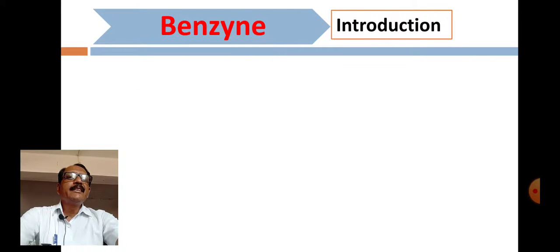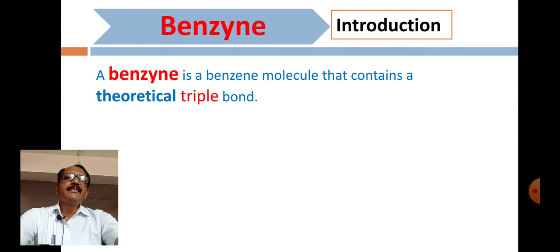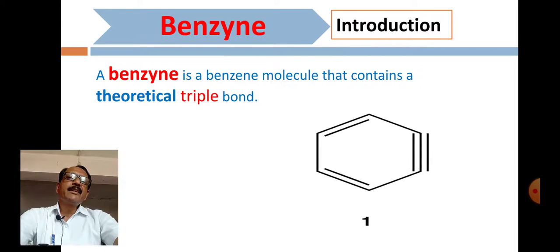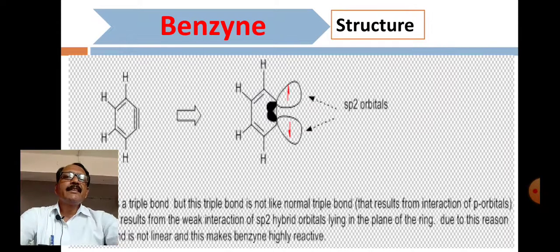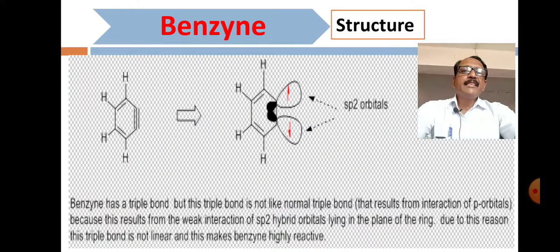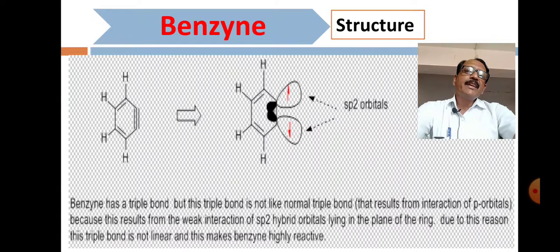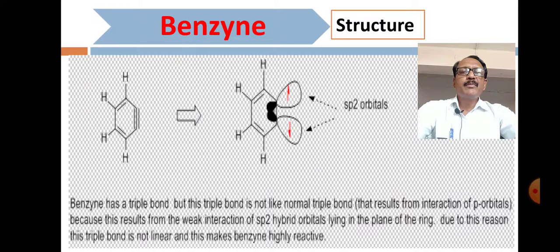The last reaction intermediate is benzyne. A benzyne is a benzene molecule that contains a theoretical triple bond. This triple bond is not like a normal triple bond — it results from the weak interaction of SP2 hybrid orbitals lying in the plane of the ring, rather than from the interaction of P orbitals. Because of this, the triple bond is not linear, and this makes benzyne highly reactive.